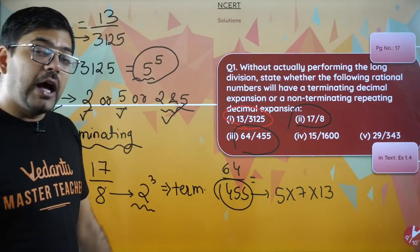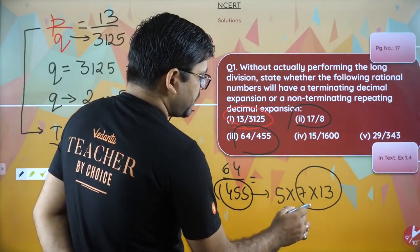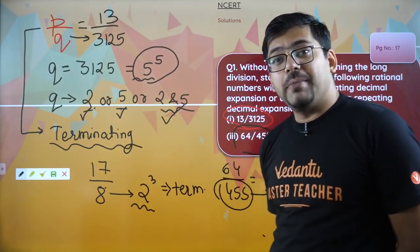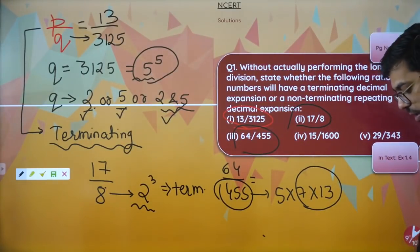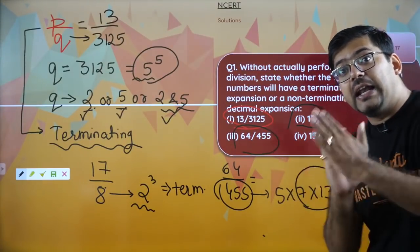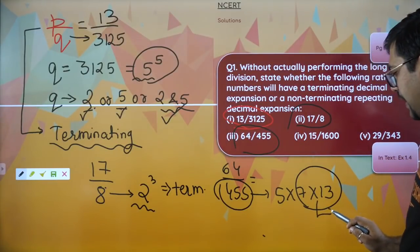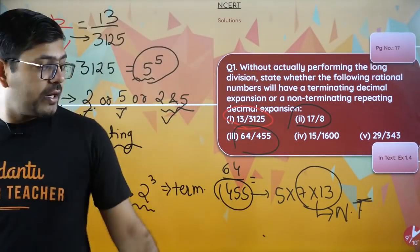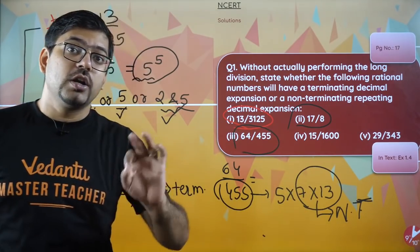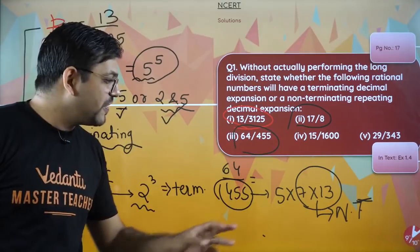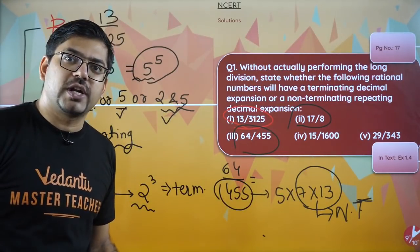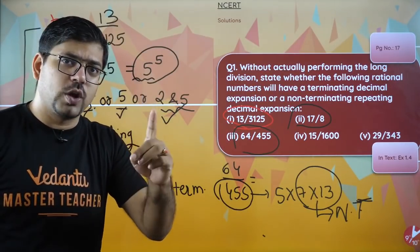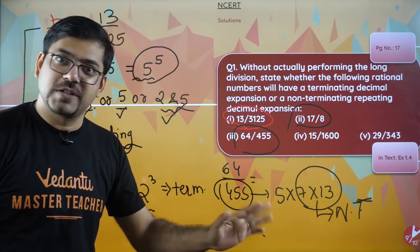Here we do have 5, a friend number, but along with 5 we have prime numbers which are not 2 or 5. I had told you that in the denominator if you have any number which is not 2 and 5, any number apart from friend numbers in the denominator, that will make the entire fraction as non-terminating. Here in the denominator, this 7 and this 13 is not a friend number - it's not 2 or 5. If there's even one number apart from 2 or 5, the entire fraction becomes non-terminating. So you just have to keep in mind that in the denominator, in the prime factors, if even one number apart from 2 or 5 comes, the entire fraction is non-terminating. Simple.